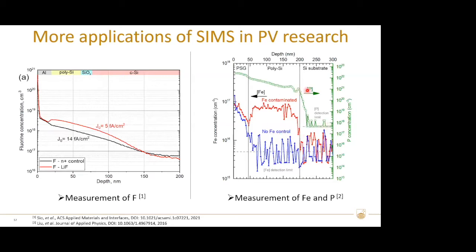Comparing the red and blue curves, we can find that iron can be detected in the non-gettered control sample (the red curve), whereas no iron impurities can be observed after gettering, as shown in the blue curve. The results confirm that phosphorous diffusion indeed removed the iron contamination.